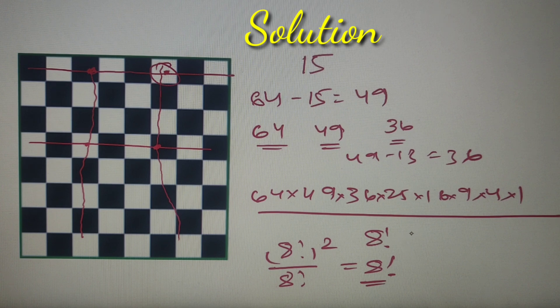So there are 8 factorial ways in which we can put 8 rooks on the chessboard such that none of them attack each other.